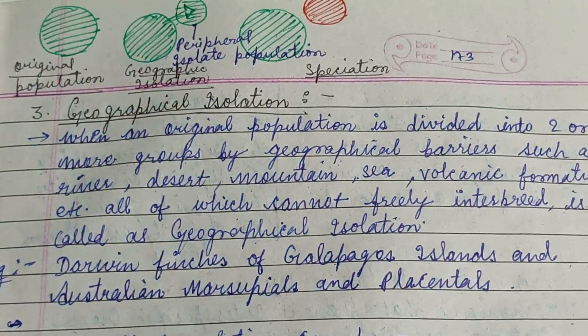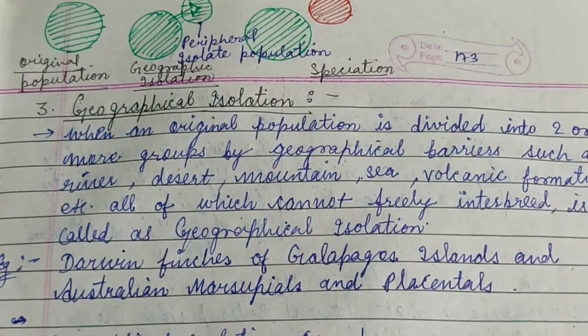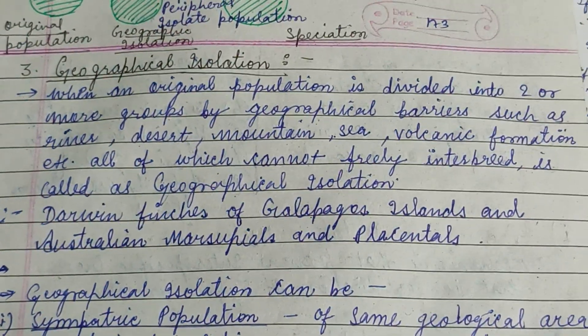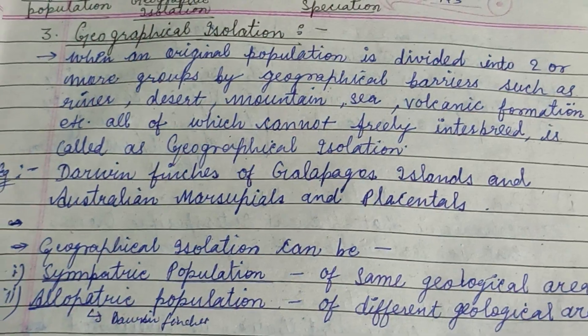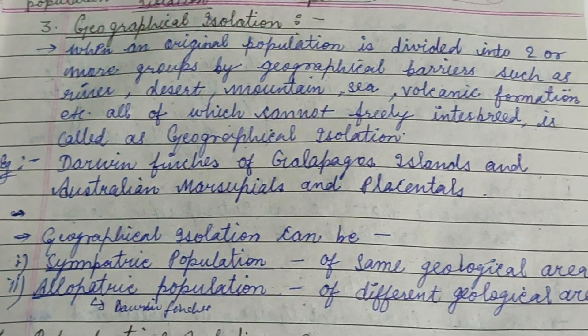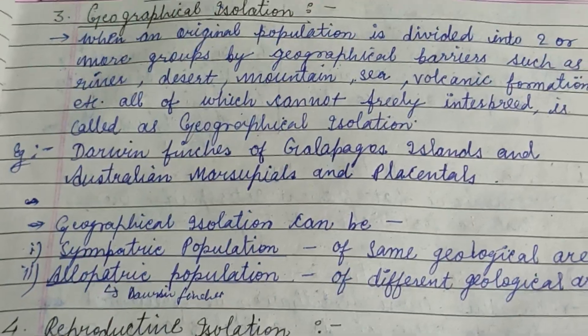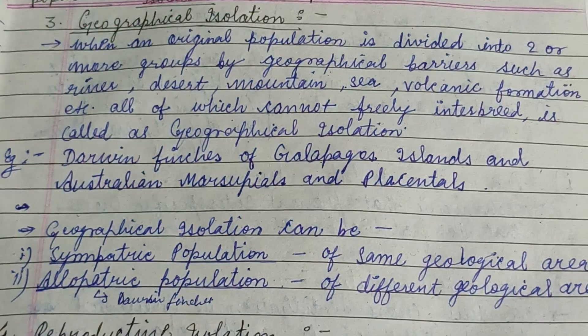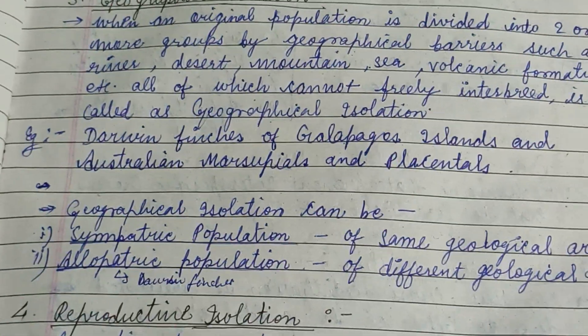Geographical isolation includes geographical or physical barriers which may be mountains, seas, volcanic formations, forests, deserts, etc., which prevent populations from freely interbreeding. This is called geographical isolation.